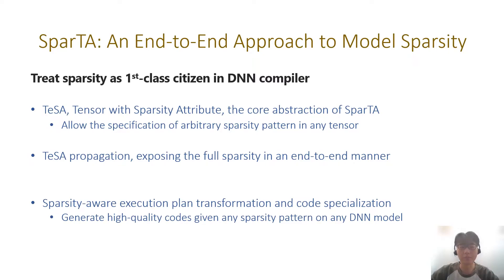All these problems motivate SPARTA. In SPARTA, we take the sparse tensor as the first-class citizen in DNN compilers. SPARTA makes three key design decisions. First, we propose TESA as the core abstraction, which allows specification of arbitrary sparsity patterns. Second, with the initial tensor from the compression algorithm, SPARTA will propagate TESA across the whole DNN model, exposing the full potential sparsity in an end-to-end manner. Finally, TESA also enables sparsity-aware execution plan transformation and code specialization to generate high-quality code for any sparsity pattern.